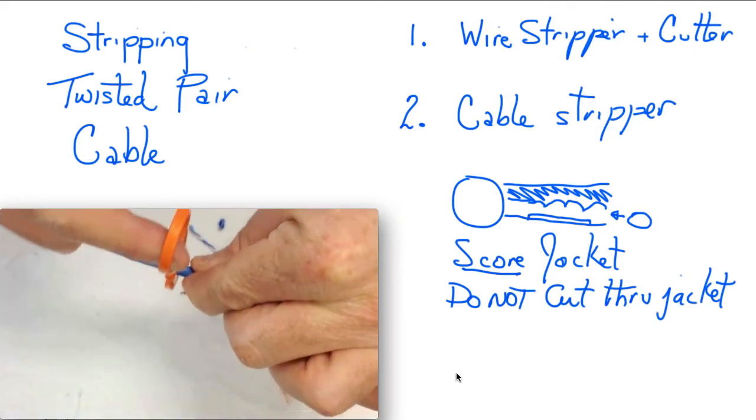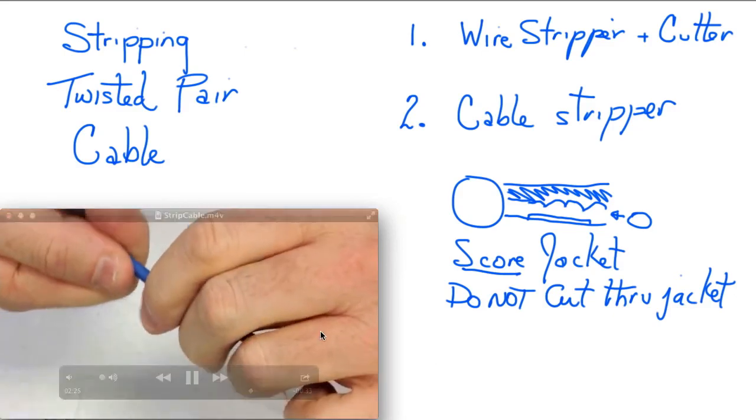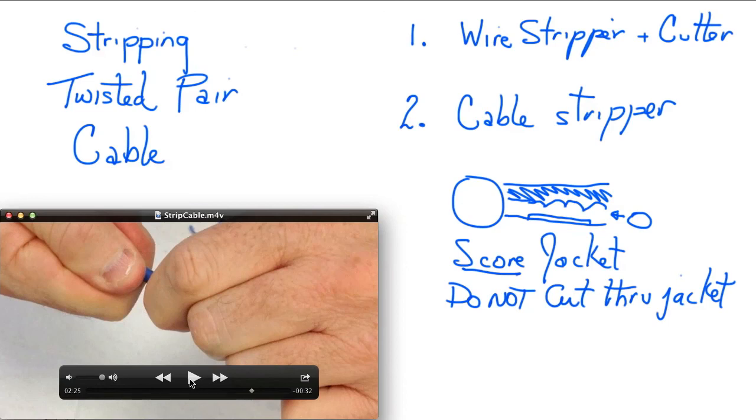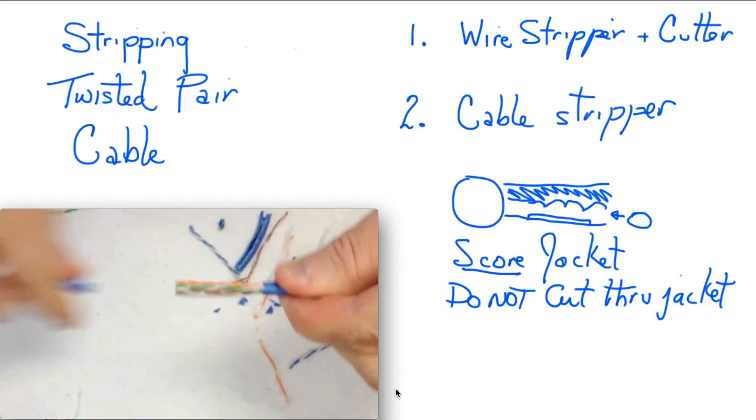Now, you make one turn and one turn only. You do not make several turns as you'll see in some videos. And what will happen now is that you twist the jacket to break it apart. Okay, that score is enough to make sure the jacket strips and separates fairly easily. So we'll twist it and we'll pull it apart.